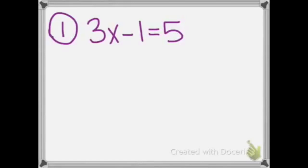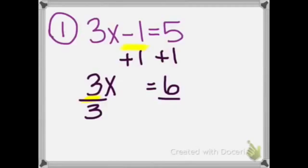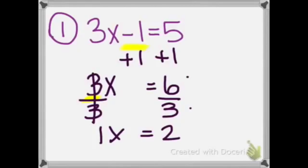Number 1 corresponds to example 1. We choose to add or subtract the term without the variable, which is the negative 1. The opposite of negative 1 is positive 1, so I'm going to add 1 to both sides of the equation. Step 4 tells us to multiply or divide the number with the variable. On this problem it says 3 times x. The opposite of times is divide, so we divide both sides by 3. 3 divided by 3 is 1x, equals 6 divided by 3 is 2. So the answer is x equals 2.